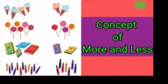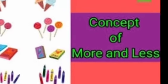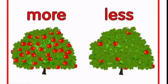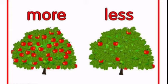Pre-number concepts. Concept number 1: more and less. Observe these pictures. What do you observe? These are apple trees. Observe both trees — apples are there. In the first tree, how many apples are there? So many are there. This is also called 'more'. M-O-R-E. More.